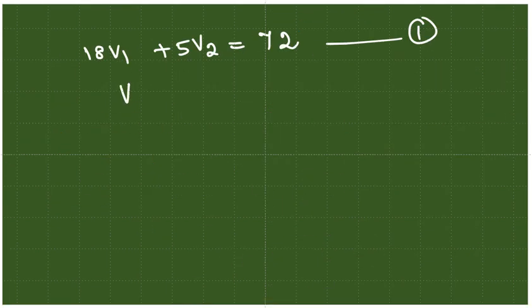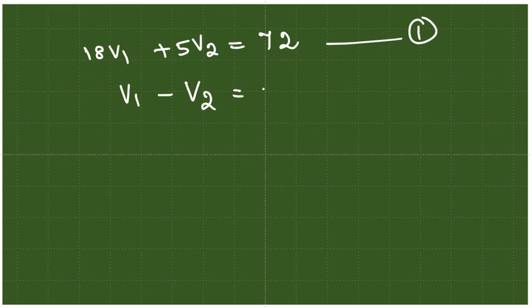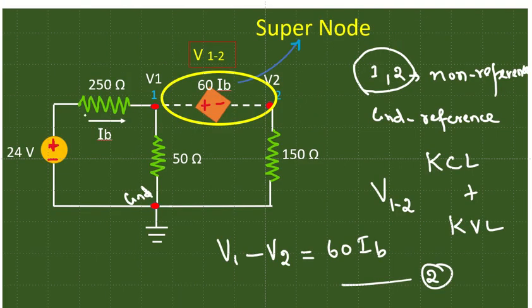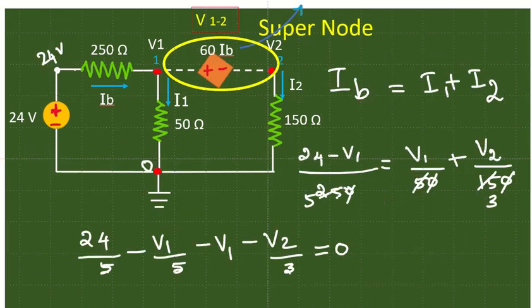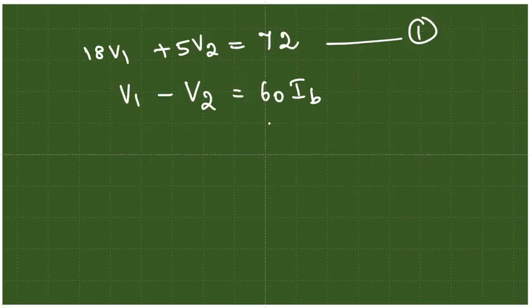Our second equation is V1 minus V2 equals 60Ib. Now you have to check what is that Ib. How to write this Ib? We have already noted this. We know that it is 24 minus V1 divided by 250. So that can be substituted here in place of Ib.